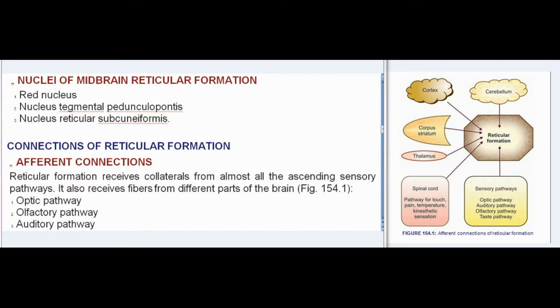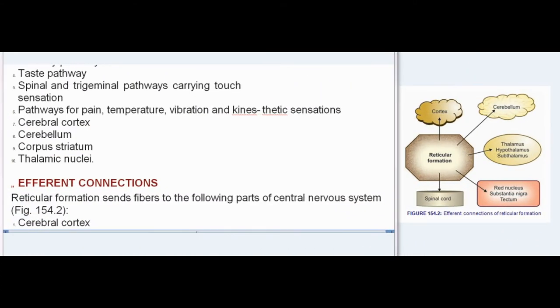Afferent inputs include: optic pathway, olfactory pathway, auditory pathway, taste pathway, spinal and trigeminal pathways carrying touch sensation, pathways for pain, temperature, vibration and kinaesthetic sensations, cerebral cortex, cerebellum, corpus striatum, and thalamic nuclei.